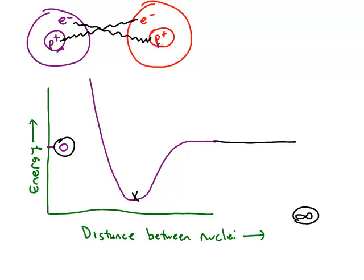If the two atoms are too close, the repulsions win out and the energy becomes too positive. So, the lowest possible energy is down here at this particular distance.